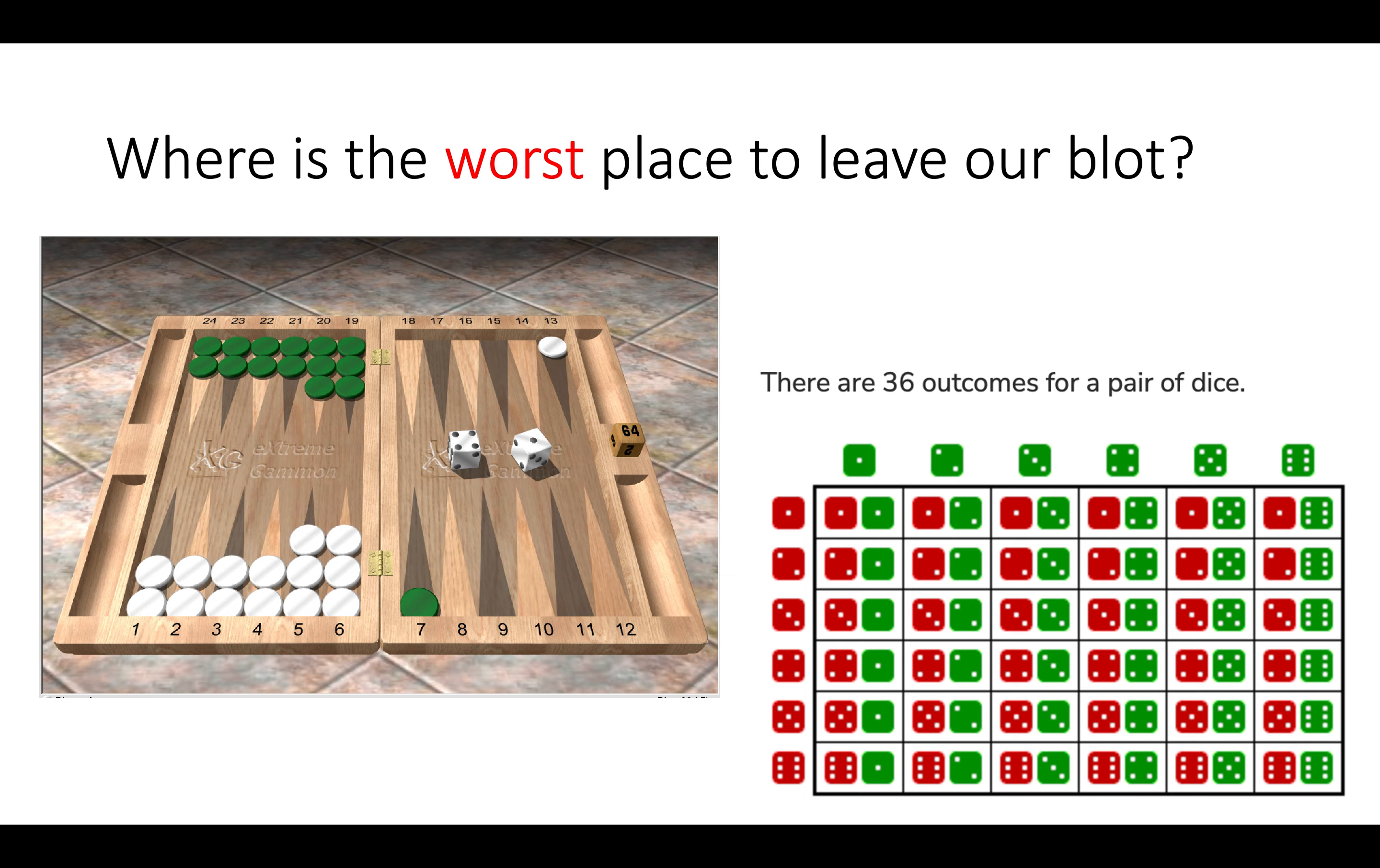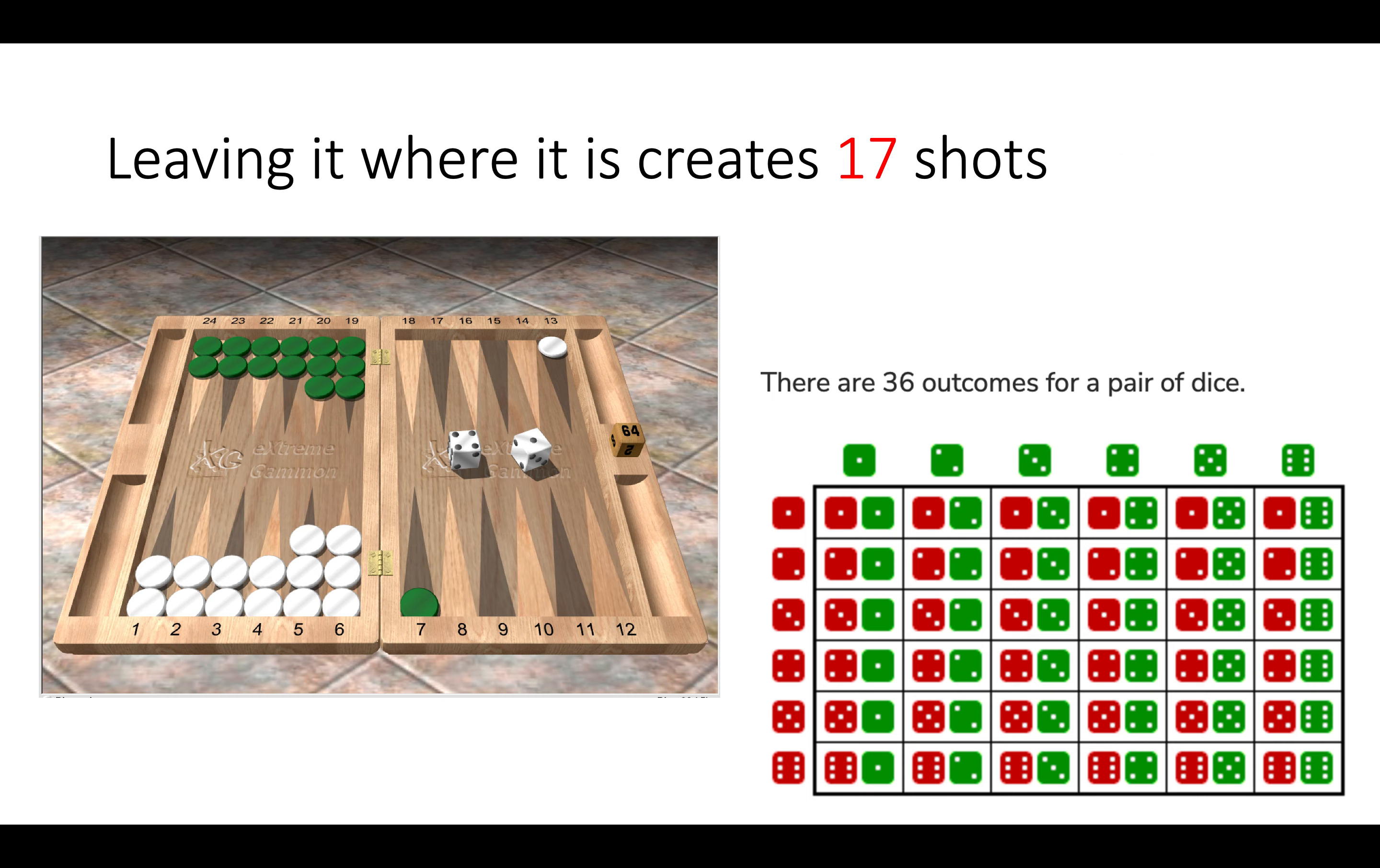So now we can also estimate where would be the worst place to leave our blot. Now the answer is leaving it where it is. This would create 17 shots.